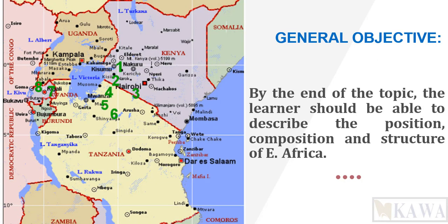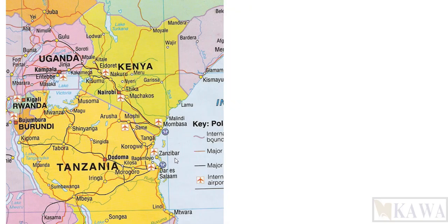Our general objective is that by the end of the topic, the learner should be able to describe the position, composition, and structure of East Africa. Just as you see the map of East Africa here, one should be able to describe its position in terms of location, the composition in terms of the countries, the structure of East Africa, and all the features which are there.